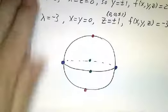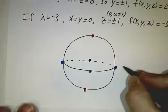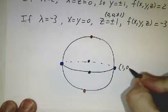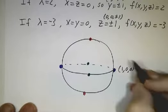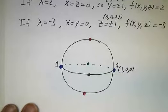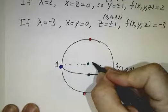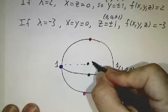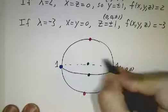So here's a picture. Here's the point 1, 0, 0, and the function value is 1. And likewise, negative 1, 0, 0. At 0, 1, 0, you get the function value is 2.